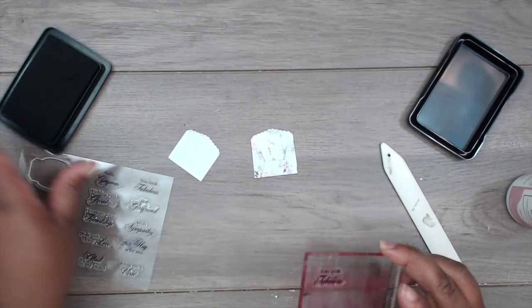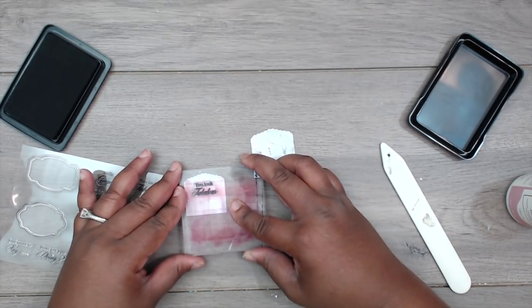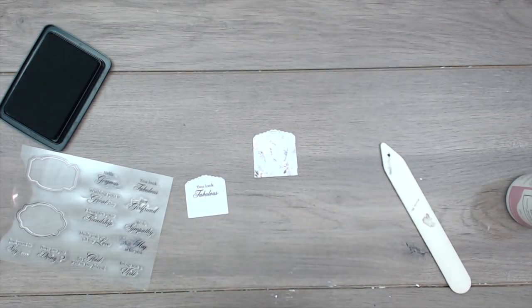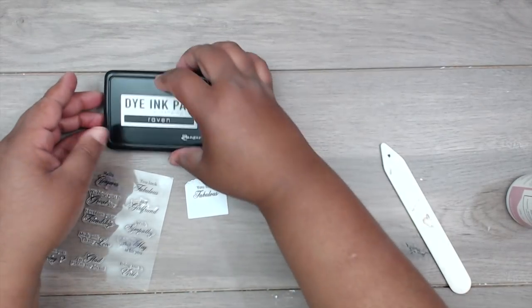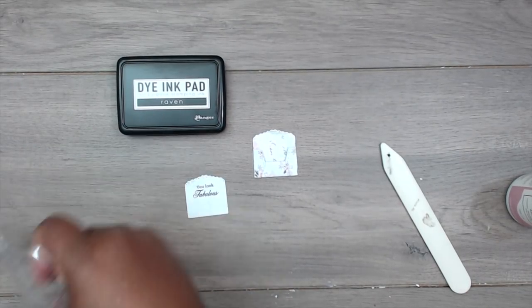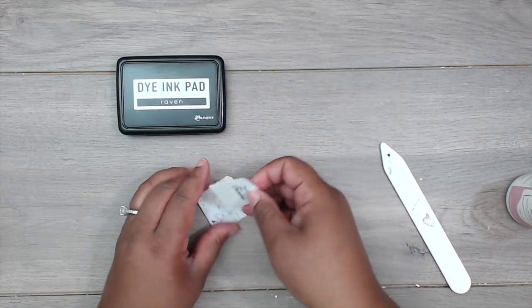I'm just going to stamp 'you look fabulous,' and I'm stamping toward the top so that it could show through when I put it on the inside of the envelope. I used some Ranger ink in Raven to stamp that.